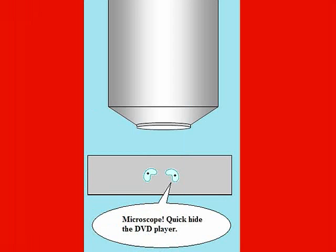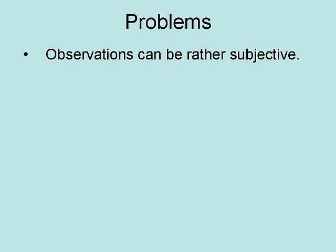Unfortunately, real-world observations sometimes miss things. For example, a critical event may occur when observations are not being made, or they may occur outside the range of the observer's sight. Observations are not without problems.